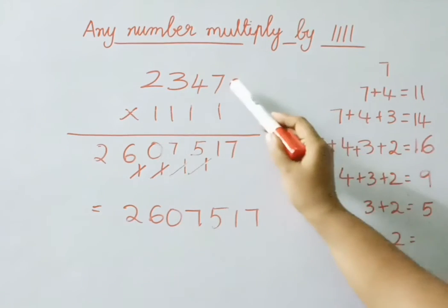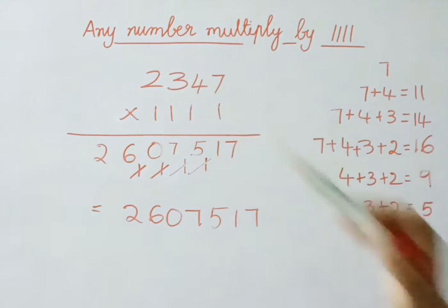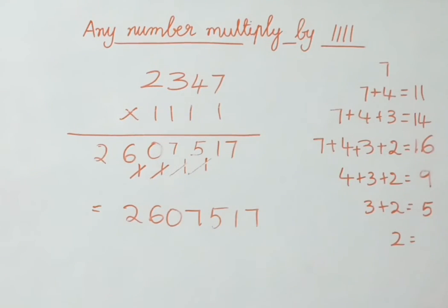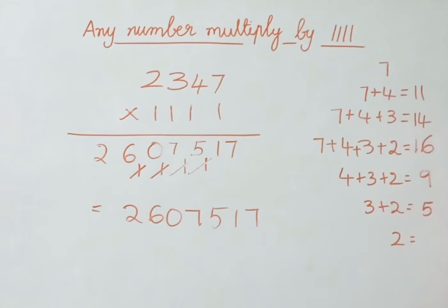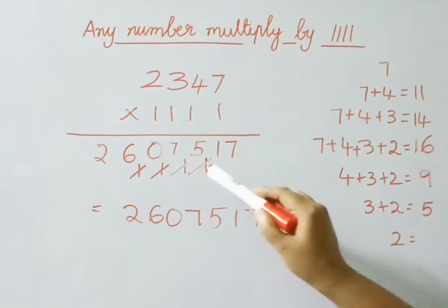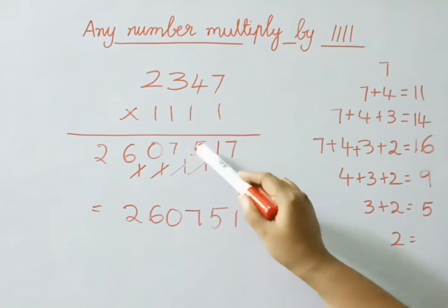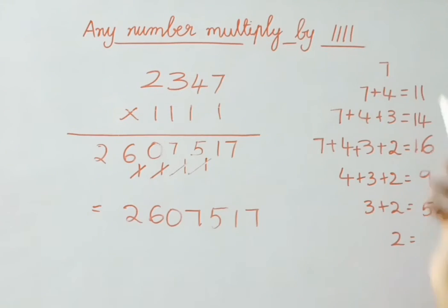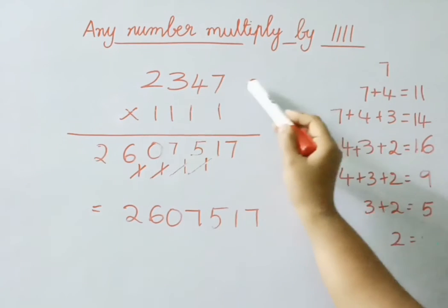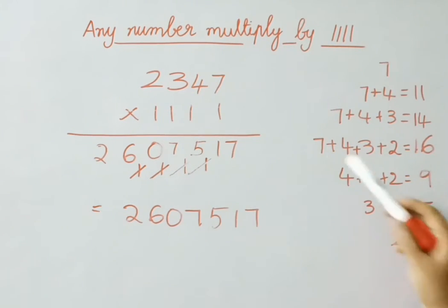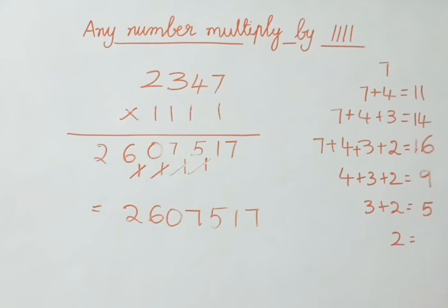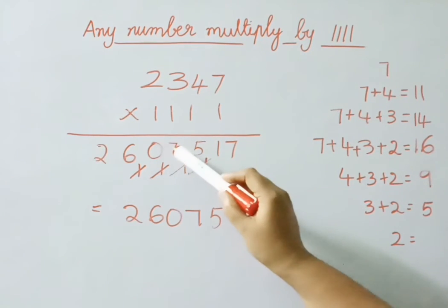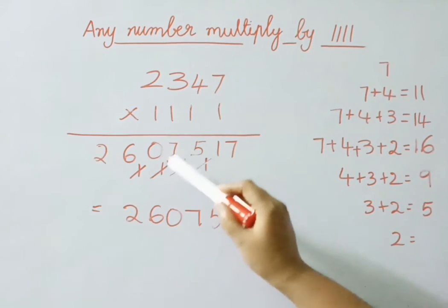Next these 3 digits we are going to add: 7 plus 4 plus 3 — that means we got 14. But with carry 1 added, we got 15. So 5, carry 1. Now right to left 4 digits we must add: 7 plus 4 plus 3 plus 2 — we got 16. With carry 1 we got 17. So 7, carry 1.